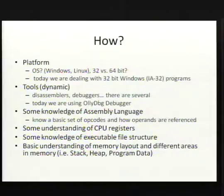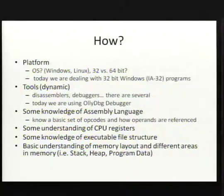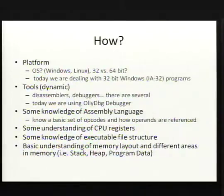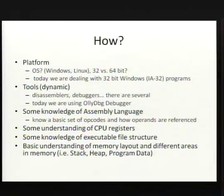So how do we go about reverse engineering? The first thing we need to know is what platform we're working on, because a lot of the tools are platform-specific. Tonight we're working with 32-bit Windows — Intel 32-bit architecture. We need disassemblers and debuggers. Tonight we're working with a Ring 3 debugger for Windows called OllyDbg — a very popular debugger. It doesn't yet work with 64-bit Windows. Immunity Debugger is another very similar tool; it was developed off the OllyDbg source code, legally acquired.